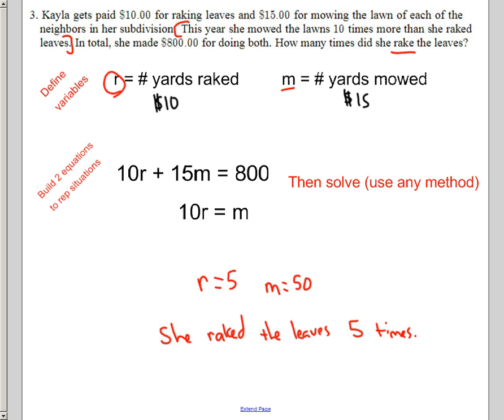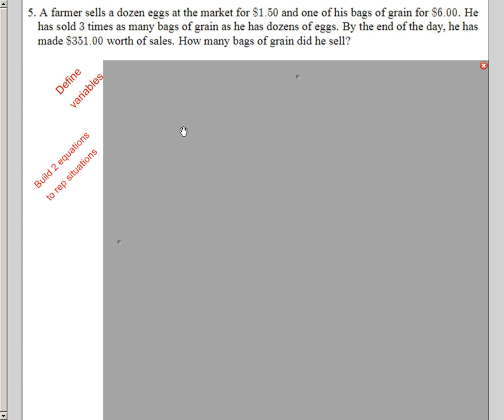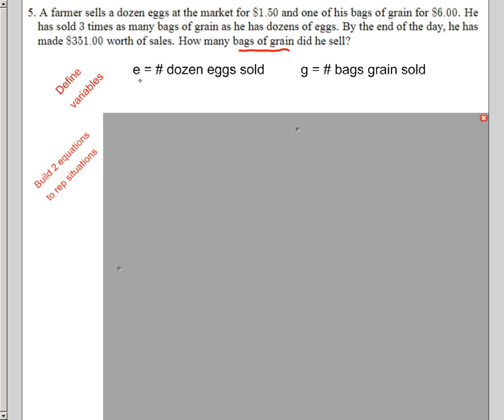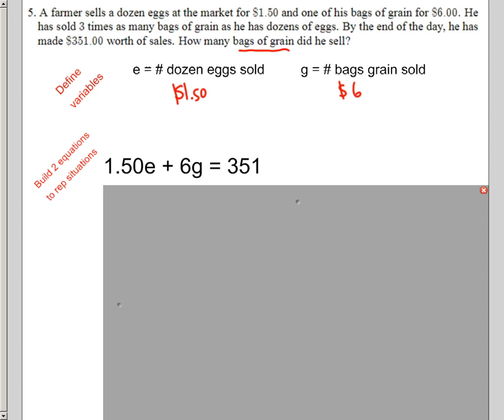Let's take a look at one more problem, and then we'll shut it down. A farmer sells a dozen eggs at the market for $1.50, and one of his bags of grain for $6. He's sold three times as many bags of grain as he has dozens of eggs. By the end of the day, he has made $351 worth of sales. How many bags of grain did he sell? Well, first off, here's my variables. E will equal the number of dozen eggs sold. G, I'm going to have it equal the number of bags of grain sold. I know that these are $1.50 for each dozen, and I know that this is $6. So let's go and put them together. $1.50 for each dozen, $6 for each bag. If I do the multiplication, I can know how much money I made off of the eggs and how much I made off of the grains. If I add it together at the end of the day, he should have $351.